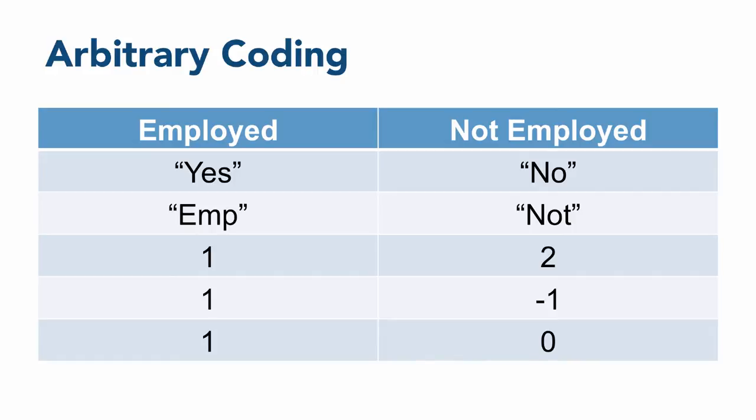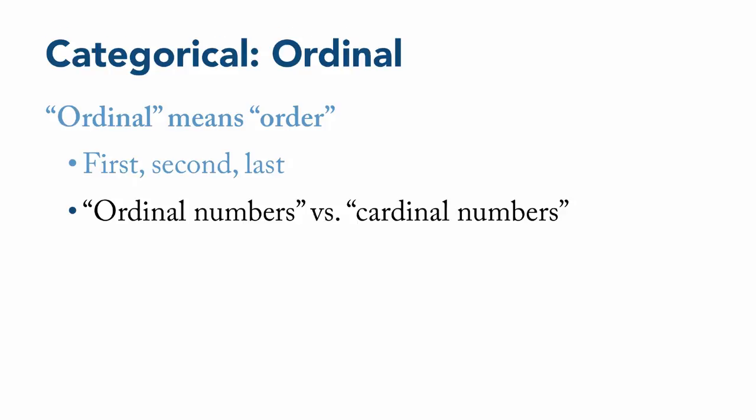The next kind of variable that we'll look at, also a categorical variable, is ordinal. Ordinal, of course, means order, like first, second, last. You may remember that these are called ordinal numbers, as opposed to cardinal numbers, which are regular numbers like one, two, three.